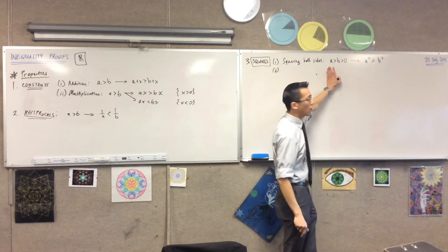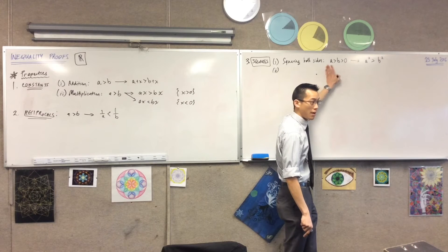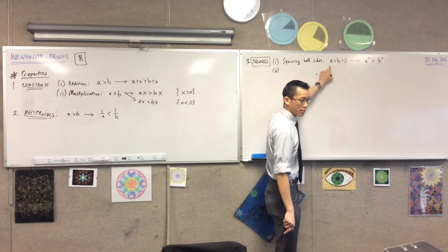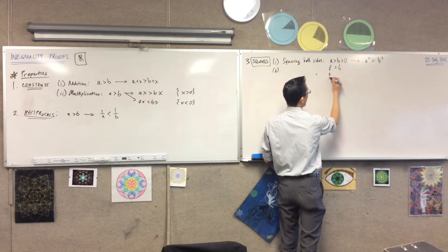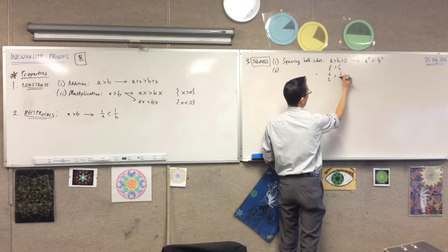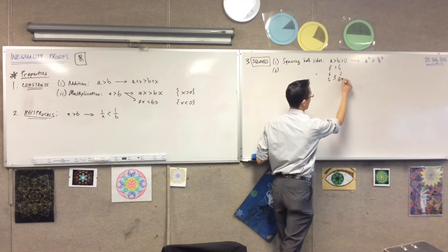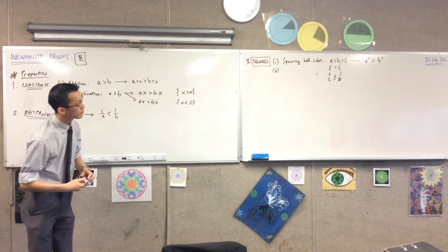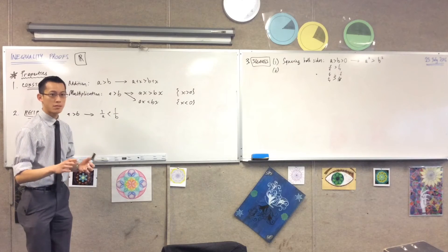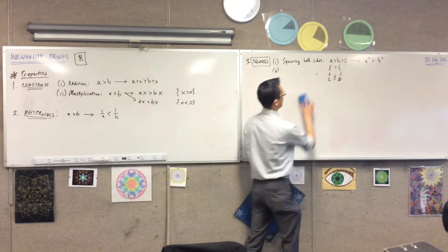For example: a half is bigger than a quarter. When you square them, you get a quarter and a sixteenth — the inequality still holds. So squaring both sides preserves the inequality when both numbers are positive.